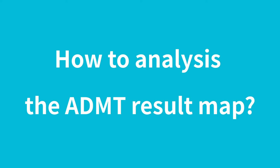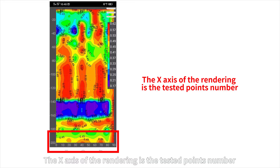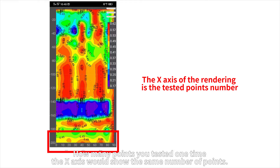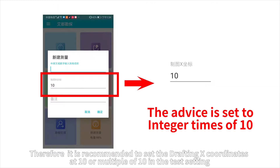How to analyze the ADMT Result Map. The x-axis of the rendering is the tested points number. How many points you test at one time, the x-axis would show the same number of points.